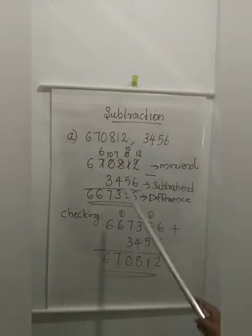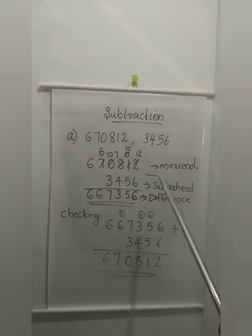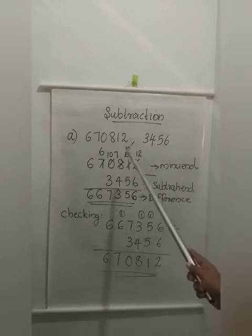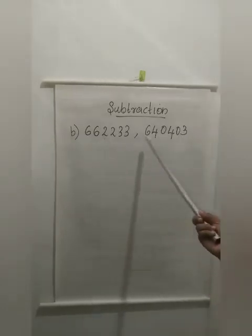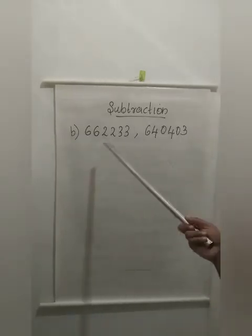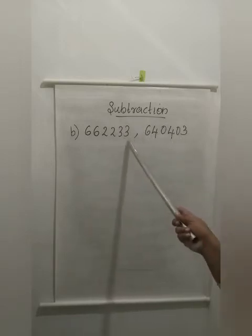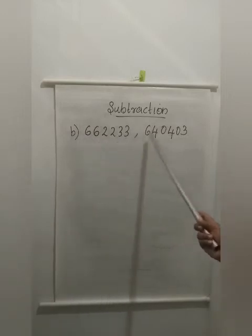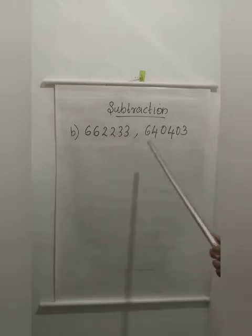So our subtraction is correct. So after subtracting, to confirm our answer is correct: adding the difference with the subtrahend, we should get the minuend. Now for the next example, we are having two numbers. The first step is to compare which number is larger — that you have to write first. Here counting, we have 6 digits. Here also counting, we have 6 digits. So both numbers are having the same number of digits.